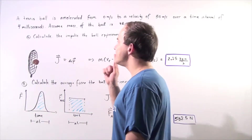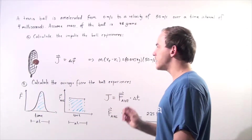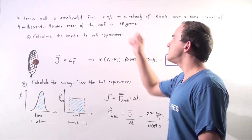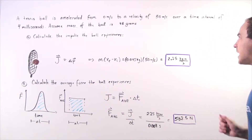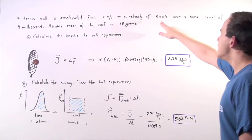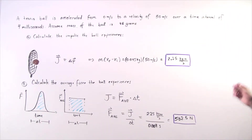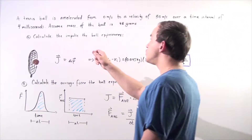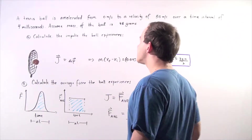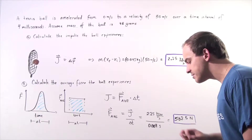Suppose a tennis ball is accelerated from zero meters per second to a velocity of 50 meters per second over a time interval of 4 milliseconds. Assuming the mass of the ball is 45 grams,